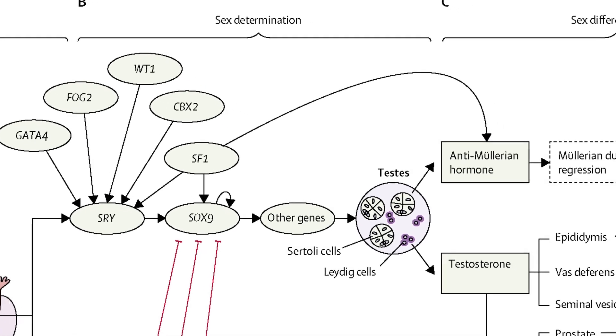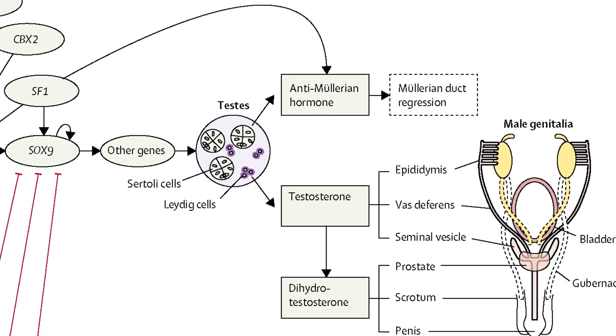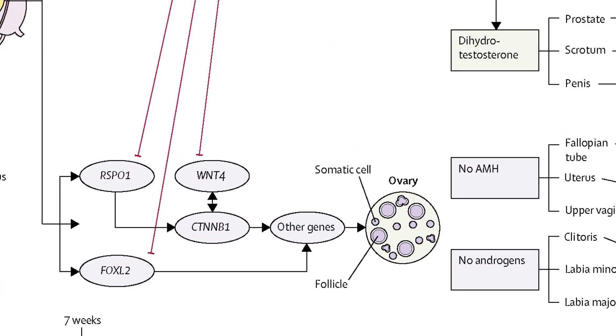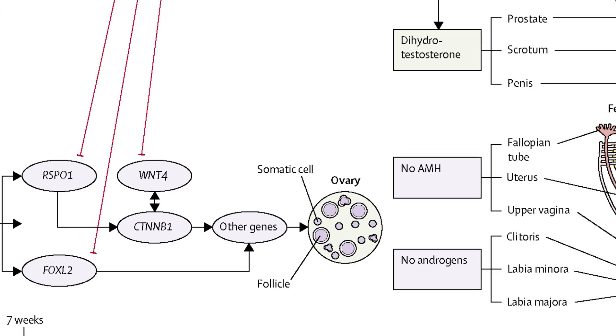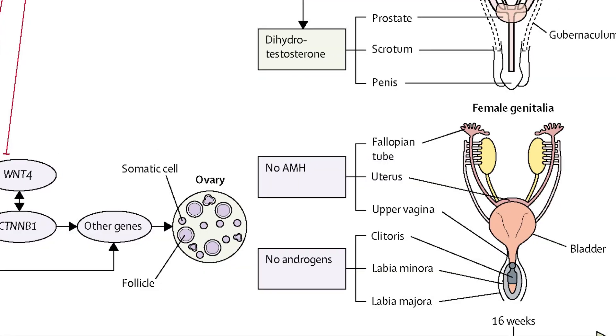From here, genes set at conception guide development for both sexes. XY embryos develop the bipotential gonads into testes, eliminate Müllerian ducts, and develop the Wolffian structures. XX embryos develop the bipotential gonads into ovaries, eliminate Wolffian ducts, and develop the Müllerian structures. In sum, both sexes start undifferentiated, develop their own sex-specific structures, and actively block the opposite-sex pathway.